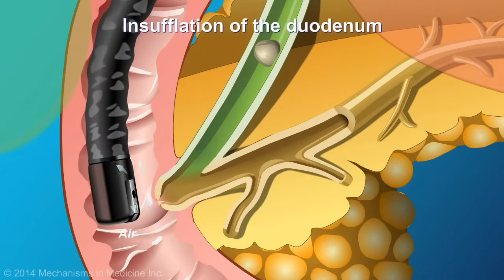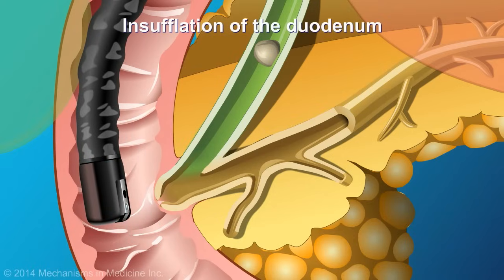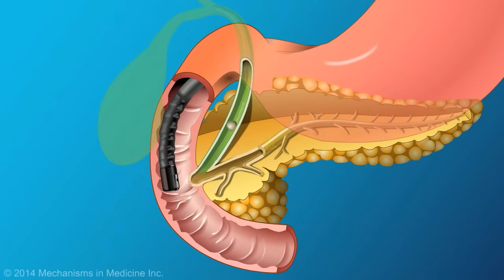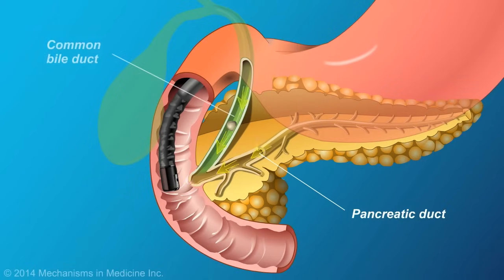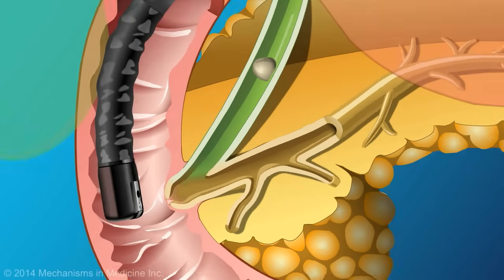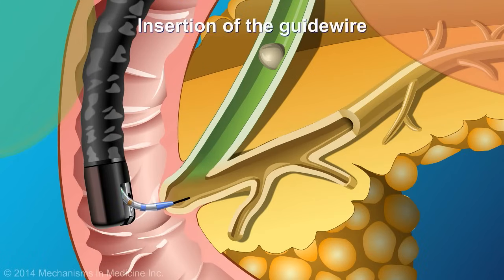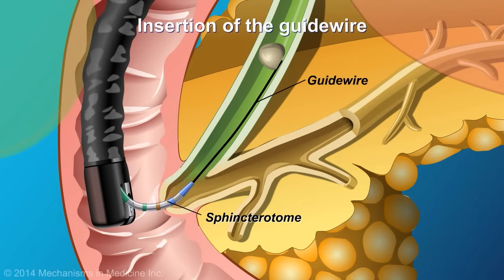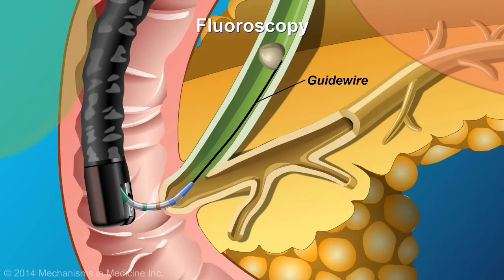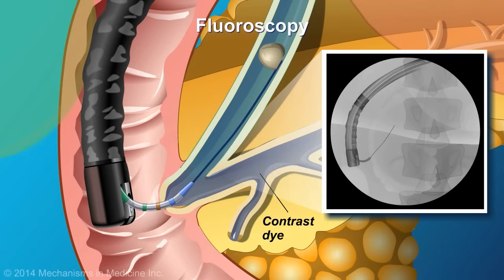Air is insufflated to distend the duodenum and allow visualization. Once the scope is in the duodenum, the major papilla is located. It is important to note that secretions from both the pancreas and the bile duct jointly drain into the duodenum through the major papilla. A guide wire and a catheter are inserted through the opening of the papilla to gain access to the pancreatic or bile duct, depending on where the disease lies. Using fluoroscopy, which is a combination of an x-ray machine, guide wire and contrast dye injected via catheter, the desired duct is cannulated and the doctor is able to identify the problem and provide treatment.